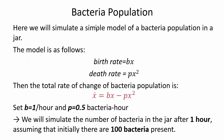In the next example we simulate a bacteria population model. The birth rate equals bx where x is the number of bacteria, the death rate equals px squared, and the total change is described by the differential equation: x-dot = bx - px².